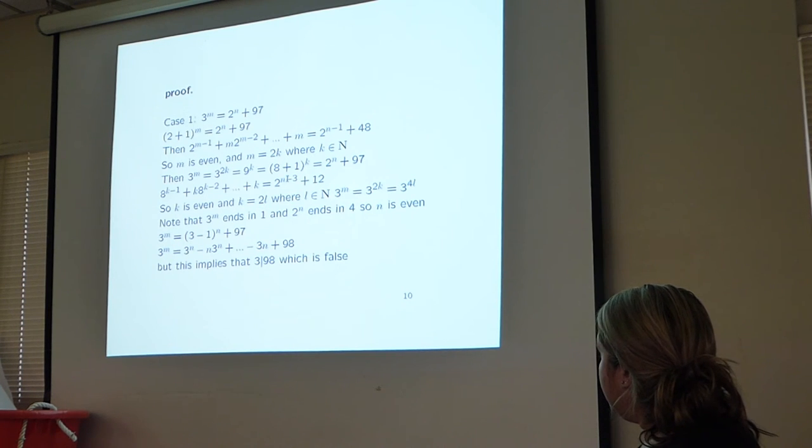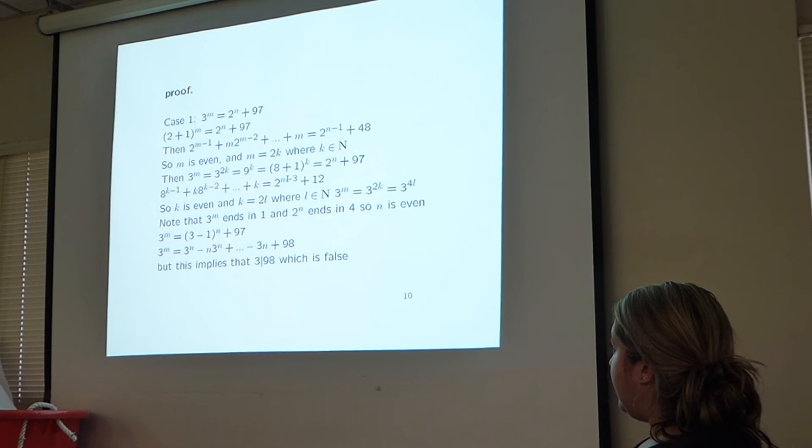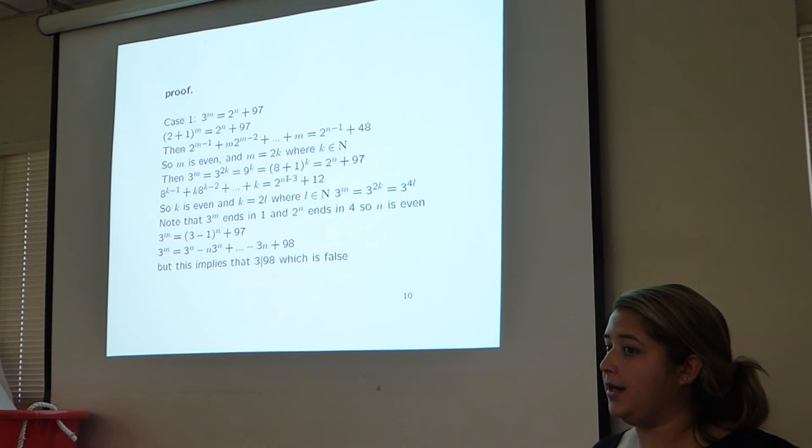We notice that 3^n ends in 1, and 2^n ends in 4. So then we know that n is even. We do binomial expansion again. Here we get that each of these have a factor of 3 in them, which implies that 98 also has a factor of 3, but 3 does not divide 98. So we know that this case is false.